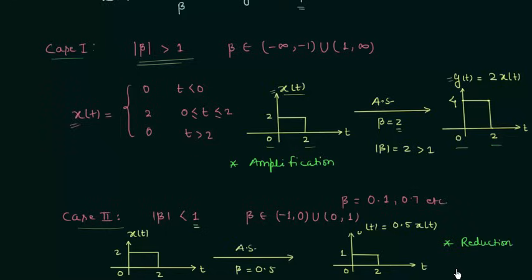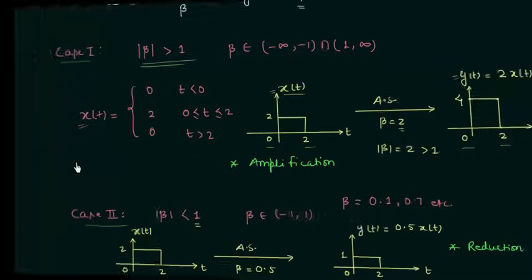This is all for this lecture. I hope both cases are clear: how to perform amplitude scaling on continuous time signals. The same process is followed for amplitude scaling of discrete time signals, which is why I am not covering discrete time signals separately. Once you know how to perform scaling, shifting, and other operations on continuous time signals, you can easily apply them to discrete time signals. See you in the next lecture.